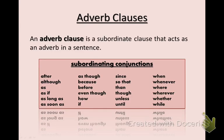An adverb clause is a subordinate clause that acts as an adverb in a sentence. There are two important parts to this definition. The first is that it is a subordinate clause. Much like other subordinate clauses, it contains a subject and a verb, but it cannot stand alone as a sentence. That's what makes it subordinate, or less important than an independent clause.